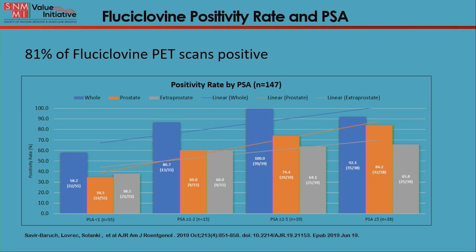More importantly, I'd like to draw your attention to the left side of that graph and show you that when PSA is less than one, we had almost 40% of patients with extra-prostatic suspicious findings. So to say that one should get this scan only when PSA is above one may not be an accurate statement. There is no real threshold, but obviously the higher the PSA, the more chance for the scan to be positive.